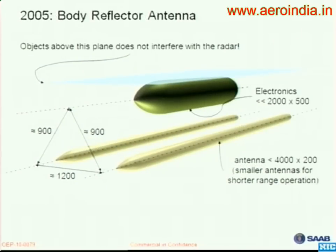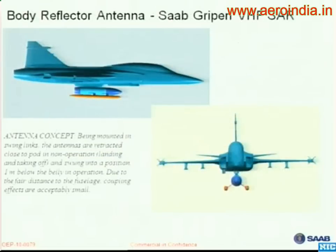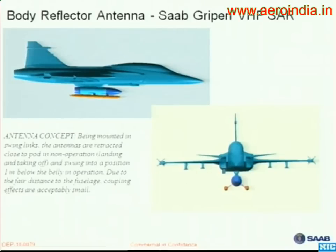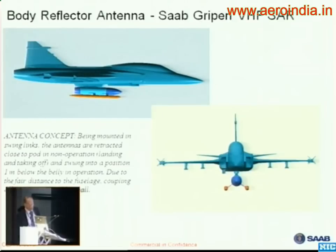Another concept for antennas is to put dipoles on the belly of the aircraft. For instance, on the Gripen fighter produced by SAAB, we made a study for integration of this type of low-frequency radar. The dipoles, when in operating position, are one meter below the belly of the aircraft — sufficient to get good antenna performance — and then fold back to get sufficient clearance for takeoff and landing.